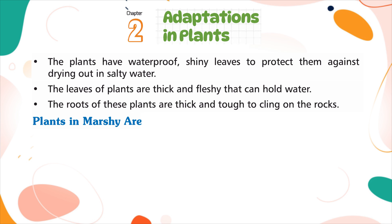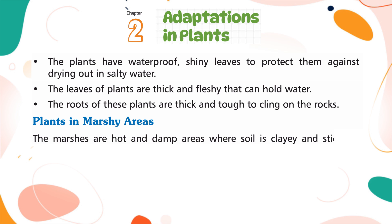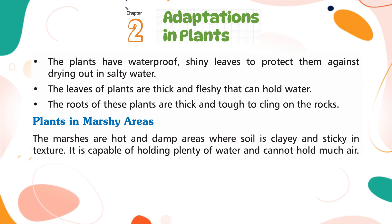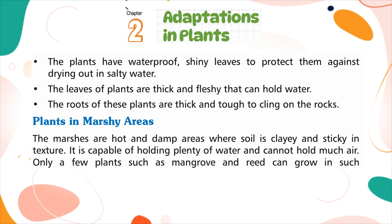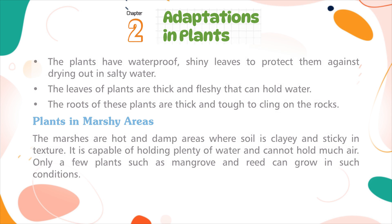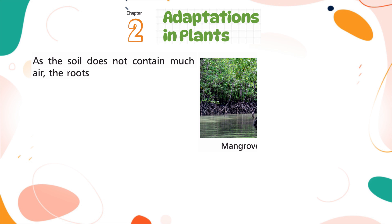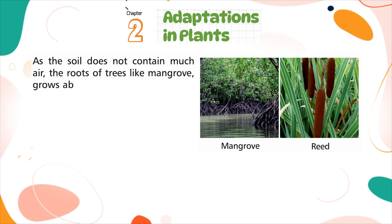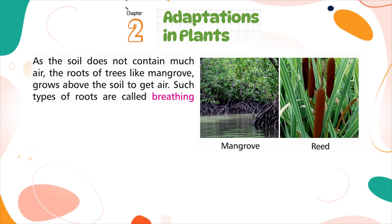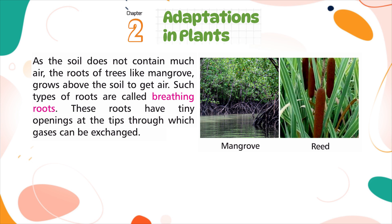Plants in Marshy Areas. The marshes are hot and damp areas where soil is clayey and sticky in texture. It is capable of holding plenty of water but cannot hold much air. Only a few plants such as mangrove and reed can grow in such conditions. As the soil does not contain much air, the roots of trees like mangrove grow above the soil to get air. Such roots are called breathing roots. These roots have tiny openings at the tips through which gases can be exchanged.